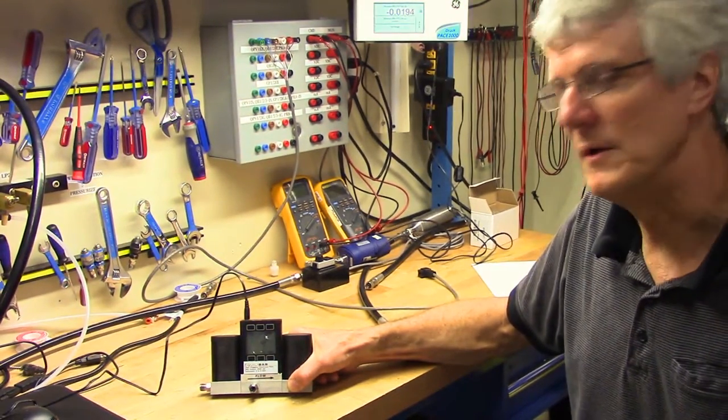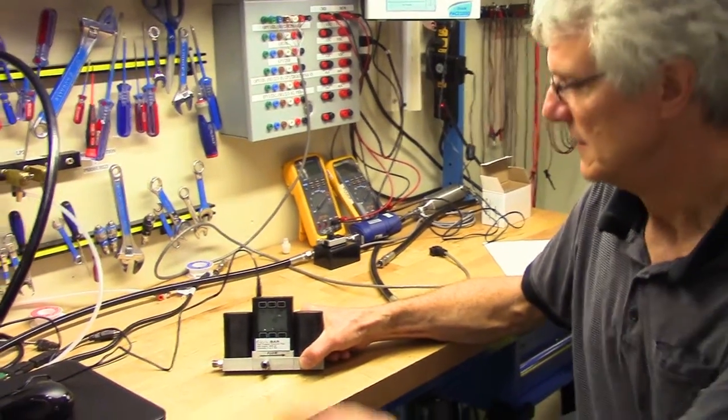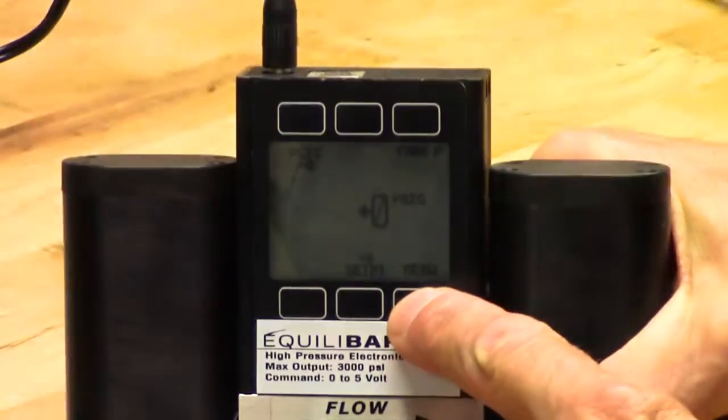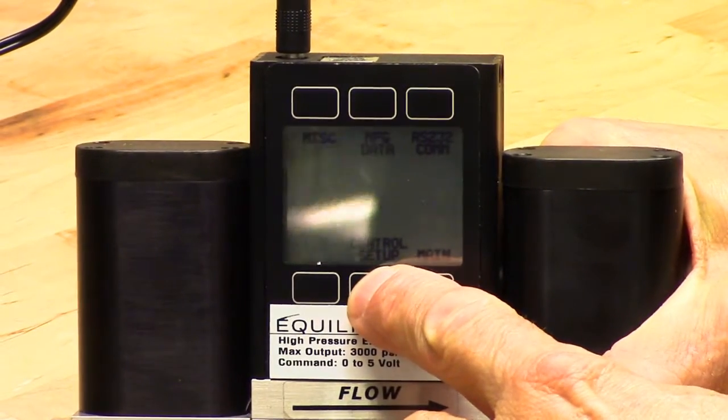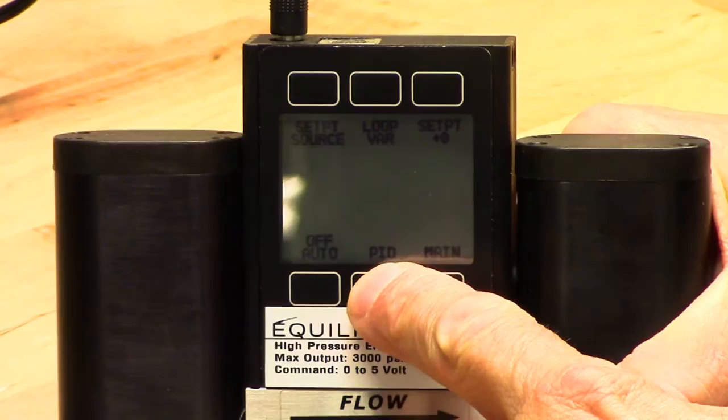The first I'll demonstrate is through the front panel. Simply go to the front panel, you press the main button, and you go to Control Setup, which is the second button over, and the same button becomes PID.